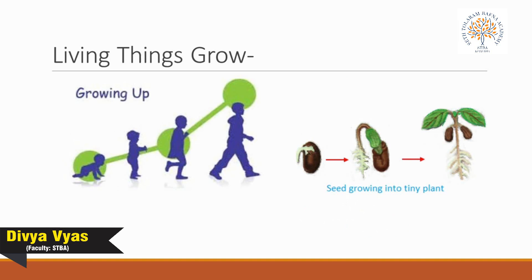Our second feature is that living things grow. Plants and animals grow with time — babies grow into adults, pups grow into dogs, and small plants grow into big trees. Have you ever seen a non-living thing such as a cricket bat grow longer, or a cricket ball grow to the size of a football? No — because non-living things do not grow.